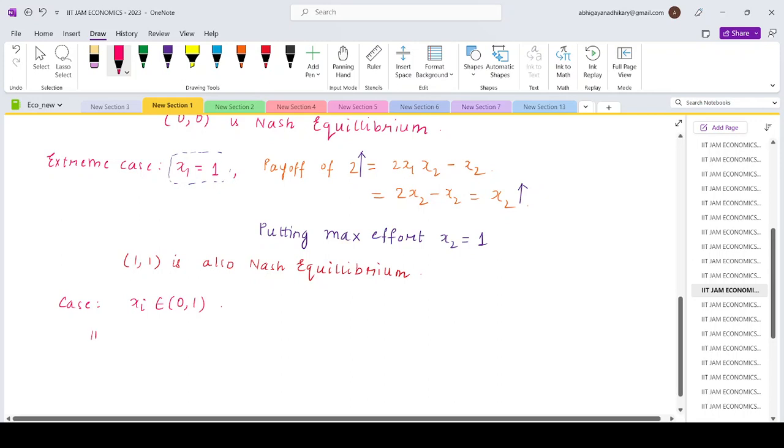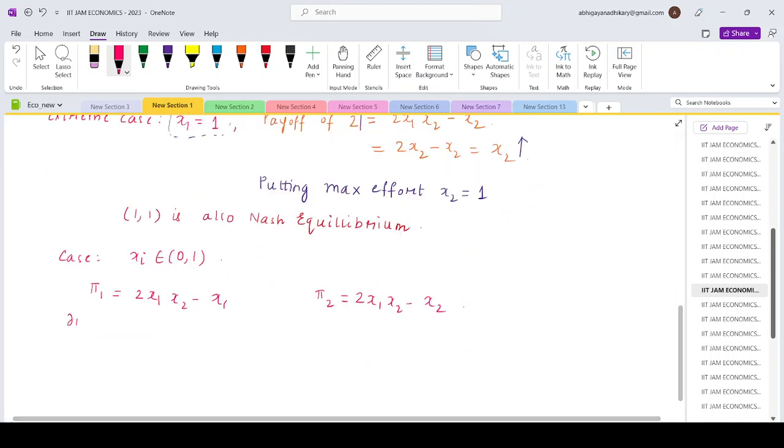The payoff of player 1 is denoted by π1, which will be 2x1x2 minus the cost which is x1. And the payoff of player 2 would be similarly 2x1x2 minus x2. The objective of player 1 now will be to choose x1 to maximize π1 given x2. So that would be 2x2 bar minus 1 equals 0. So x1 bar star will come out to be half.